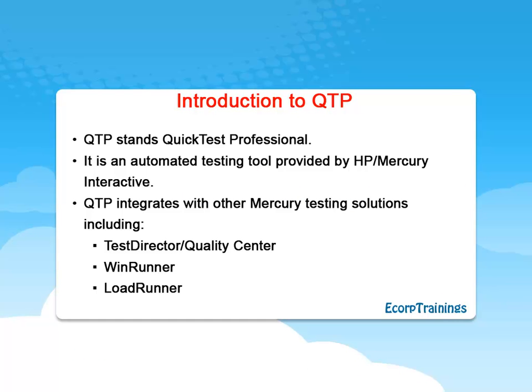QuickTest Professional is an automated functional graphical user interface testing tool that allows the automation of user actions on a web or client-based computer application. It is an automated testing tool provided by HP or Mercury Interactive. QTP integrates with other Mercury testing solutions including TestDirector, WinRunner, and LoadRunner.